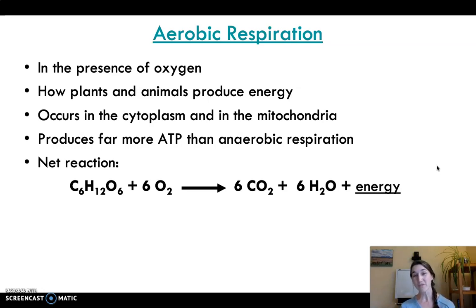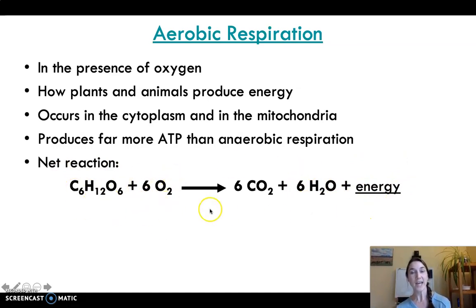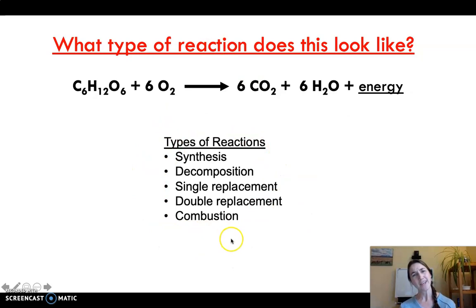Hopefully this looks familiar, because this is basically just the inputs and outputs of photosynthesis swapped. In photosynthesis, plants absorb carbon dioxide, water, and light energy and produce glucose and oxygen. In cellular respiration, the reverse process is happening because the whole point is we're breaking down glucose to get energy. Think back to the types of reactions you learned about in biochem one — pause the video and identify which type of reaction this looks like. Hopefully you noticed this is a combustion reaction.